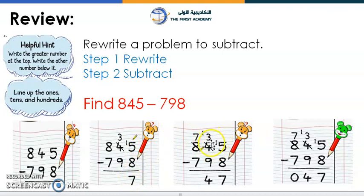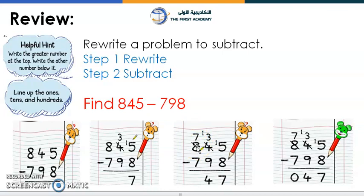Now the 4 became 3 because we took 1 and gave it to the 5. In the tens column, more on the floor again — we need to go to the next door and ask for more. We ask the 8 to give us 1, so the 3 becomes 13 and the 8 becomes 7.